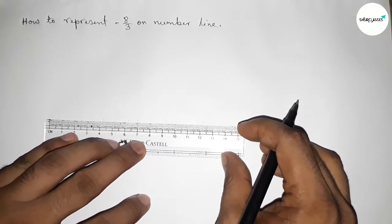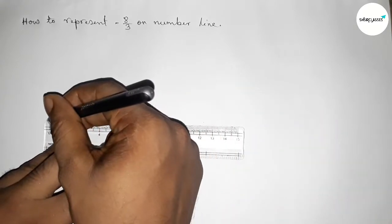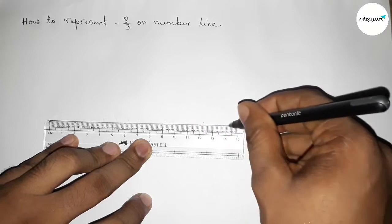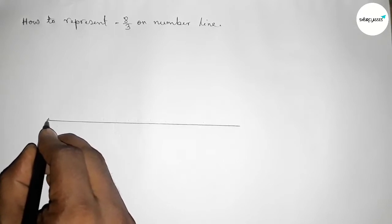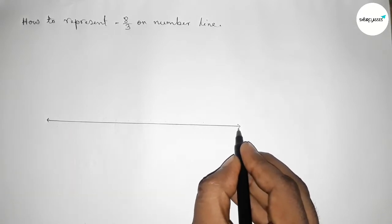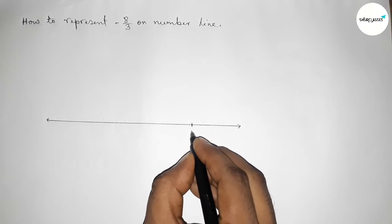First of all we have to construct a number line. We have to draw here a line of any length and take arrow marks on both sides. Now taking the number zero here.